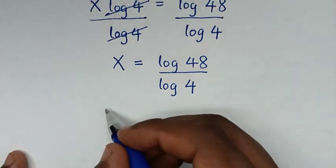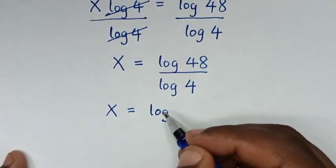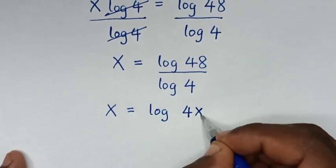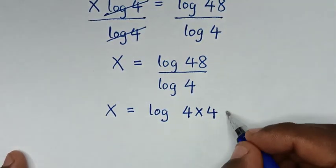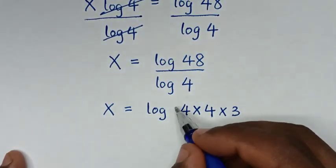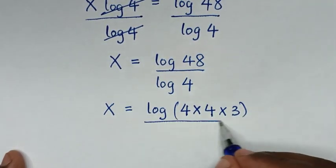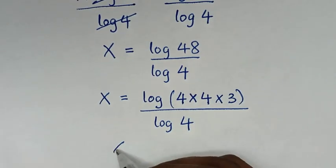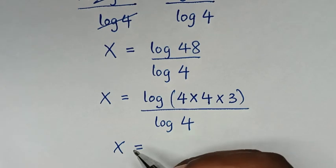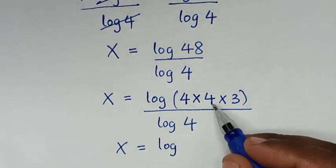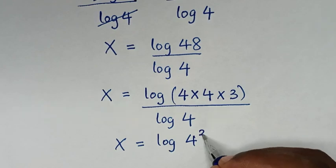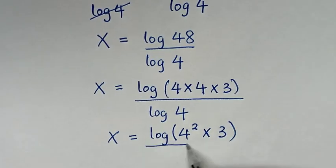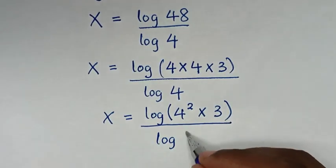Then, in the next step, x is equal to log of 48 to the base 4. Now, 48 is the same as 4 times 4 times 3. 4 times 4 is 16, and 16 times 3 is 48. So we have log of 4 squared times 3, all over log of 4.